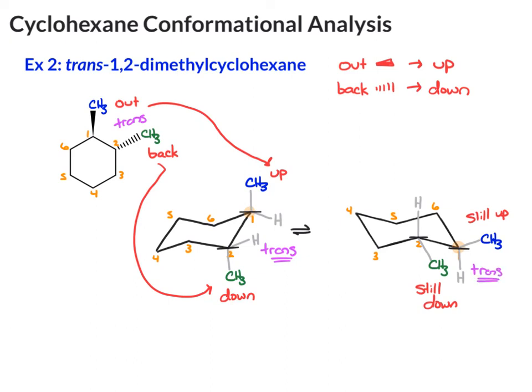The last thing to do is figure out which of these chair conformations is more stable. In the second conformation, both of our large methyl groups are equatorial. So this chair conformation on the right is the most stable chair.